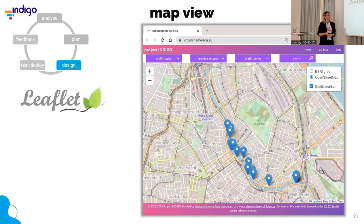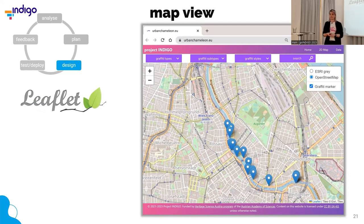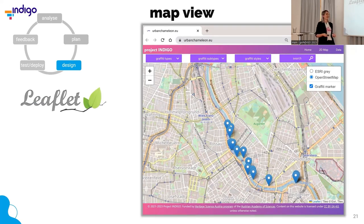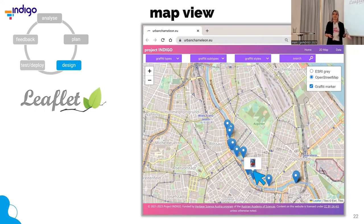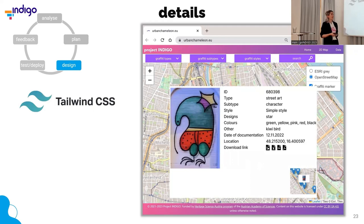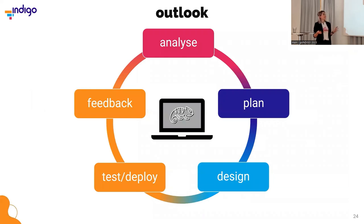For the maps, we are using Leaflet, which is a widely used JavaScript library for online web maps. As you can see, we are already able to display some graffiti information that we put onto OpenAtlas and can fetch the data. We can hover over the different images and even display more information about each graffiti. So these are the design stages we are currently in.